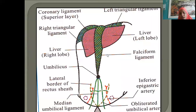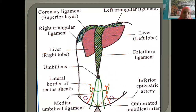Between the two lobes of the liver we have a sickle-shaped fold of peritoneum called the falciform ligament. The vertical disposition of peritoneum starts at the umbilicus, from which it goes in the form of the falciform ligament, dividing the liver into right lobe and left lobe.